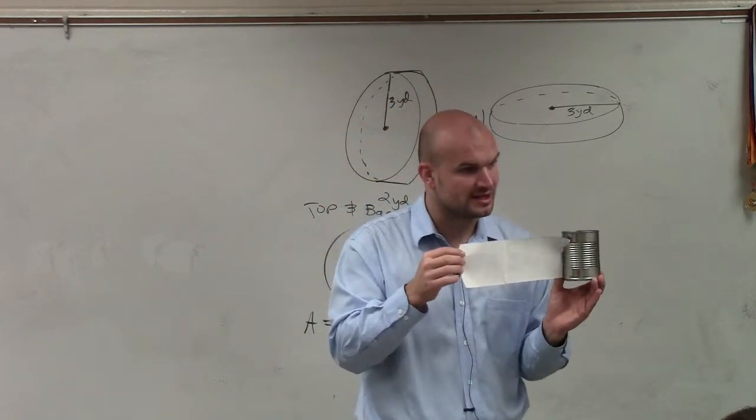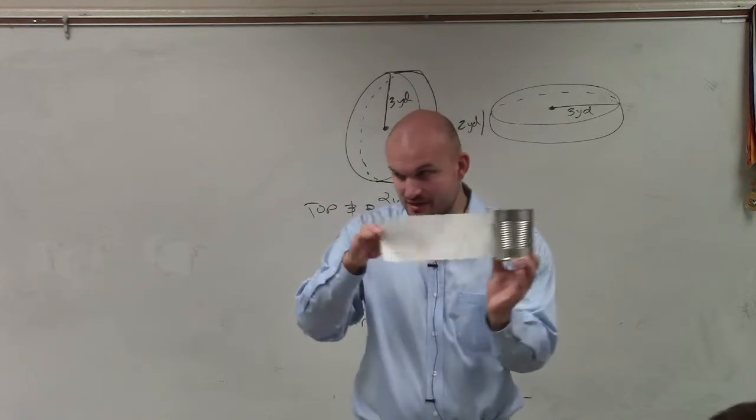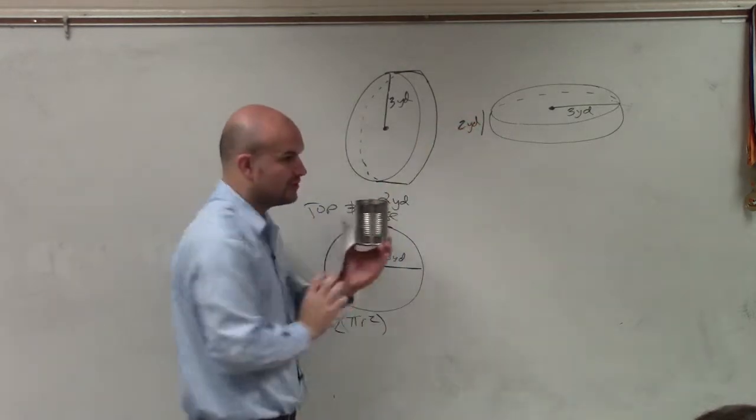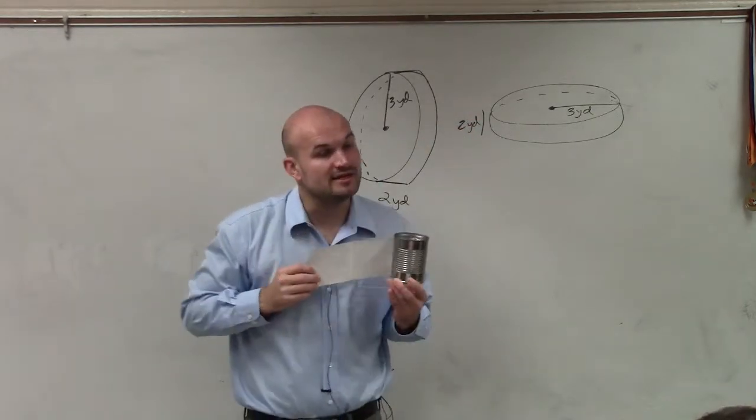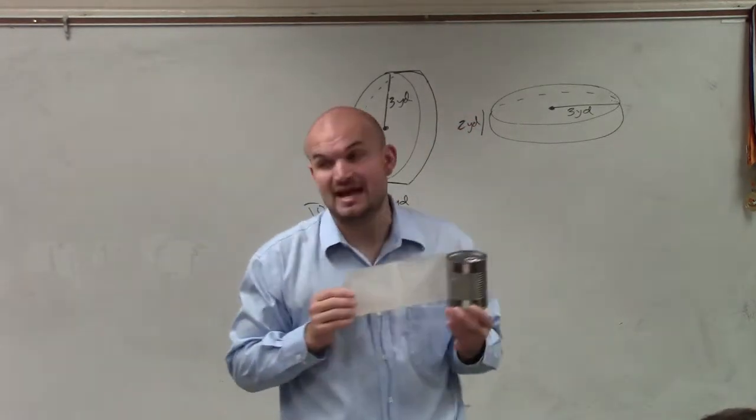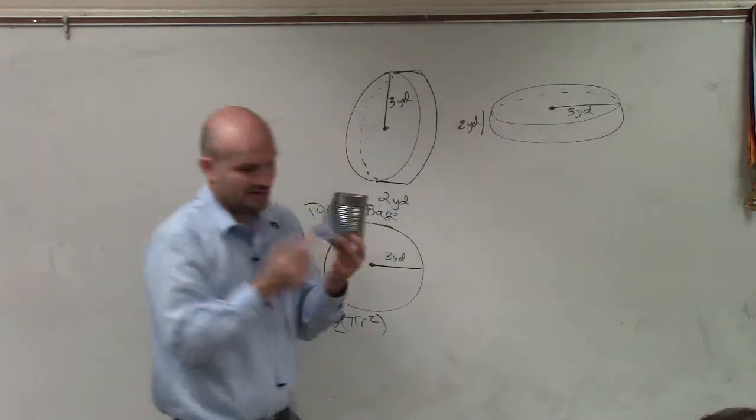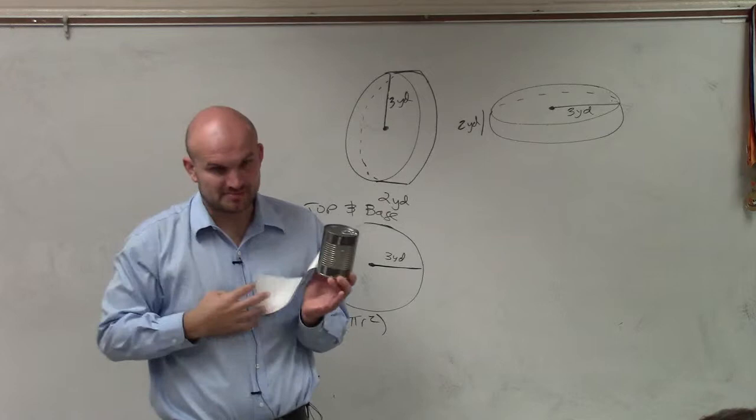So we know how to find the area of a rectangle. We know what the height is. The height is the height of the cylinder, which we know is two yards. However, to find the area of a rectangle, we need to know the base and the height. We know the height, but we need to find the length of this base.